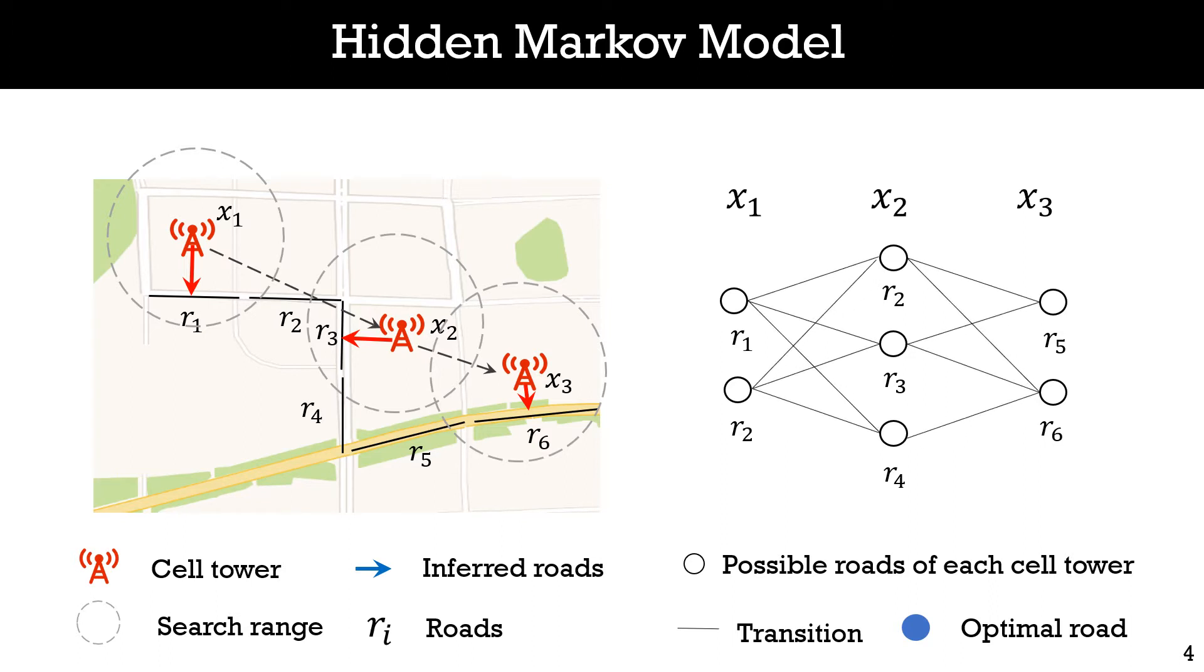As the model process proceeds, the product of emission probabilities and transition probabilities of some road sequences increase faster than others. Finally, given the estimated probability of all possible roads, hidden Markov models use dynamic programming to find the optimal road sequence with the highest product value.